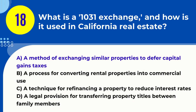Explanation. A 1031 exchange, named after Section 1031 of the U.S. Internal Revenue Code, allows real estate investors in California and other states to defer paying capital gains taxes on an investment property when it is sold, as long as another like-kind property is purchased with the profit gained from the sale.